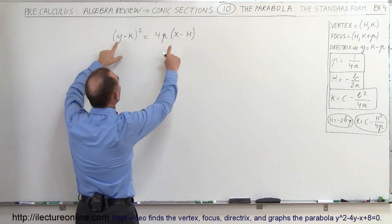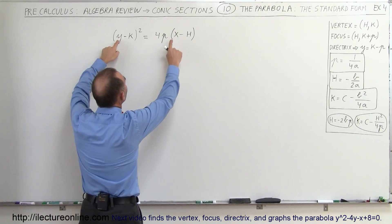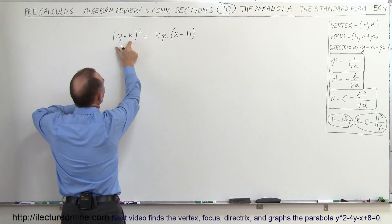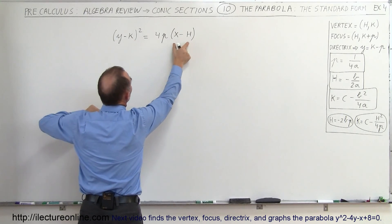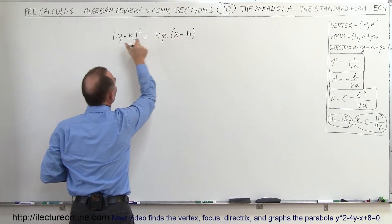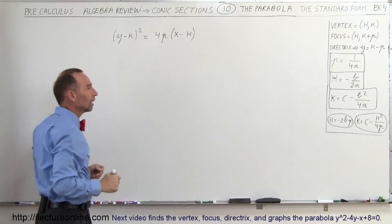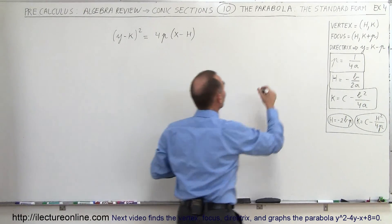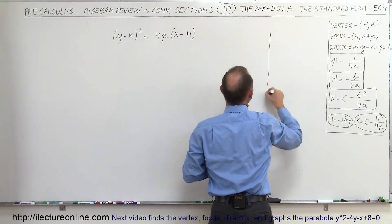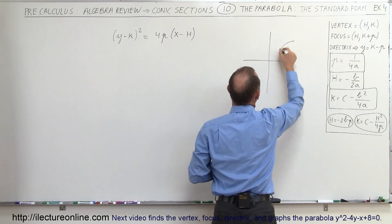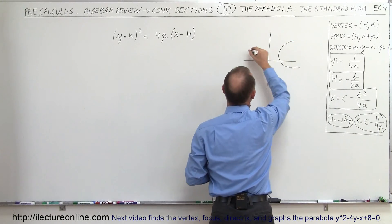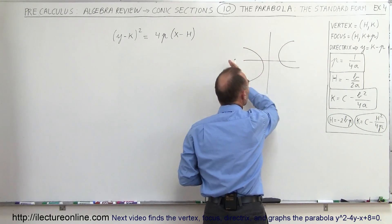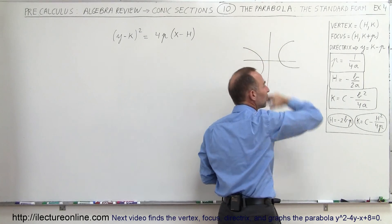Basically what we've done is we've interchanged the y and the x. So instead of having x minus h in one place, we have it over there, and instead of having y minus k there, we have it over there. The result is that the parabola is going to open to the right or to the left, instead of up or down.